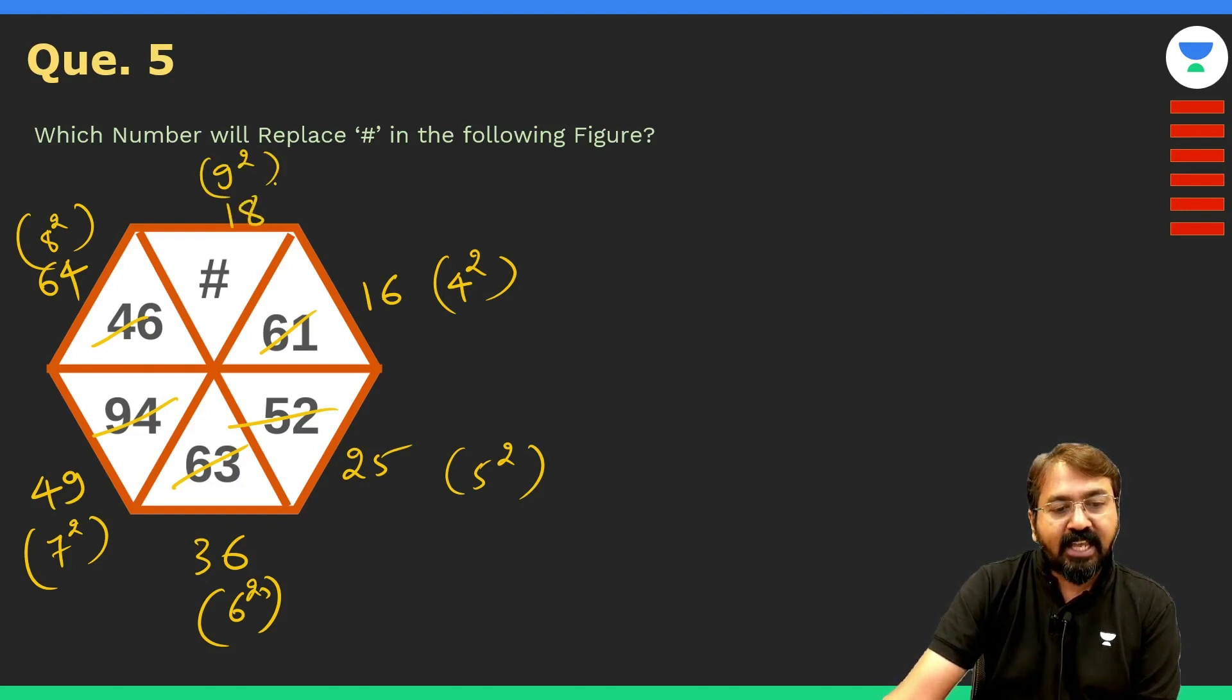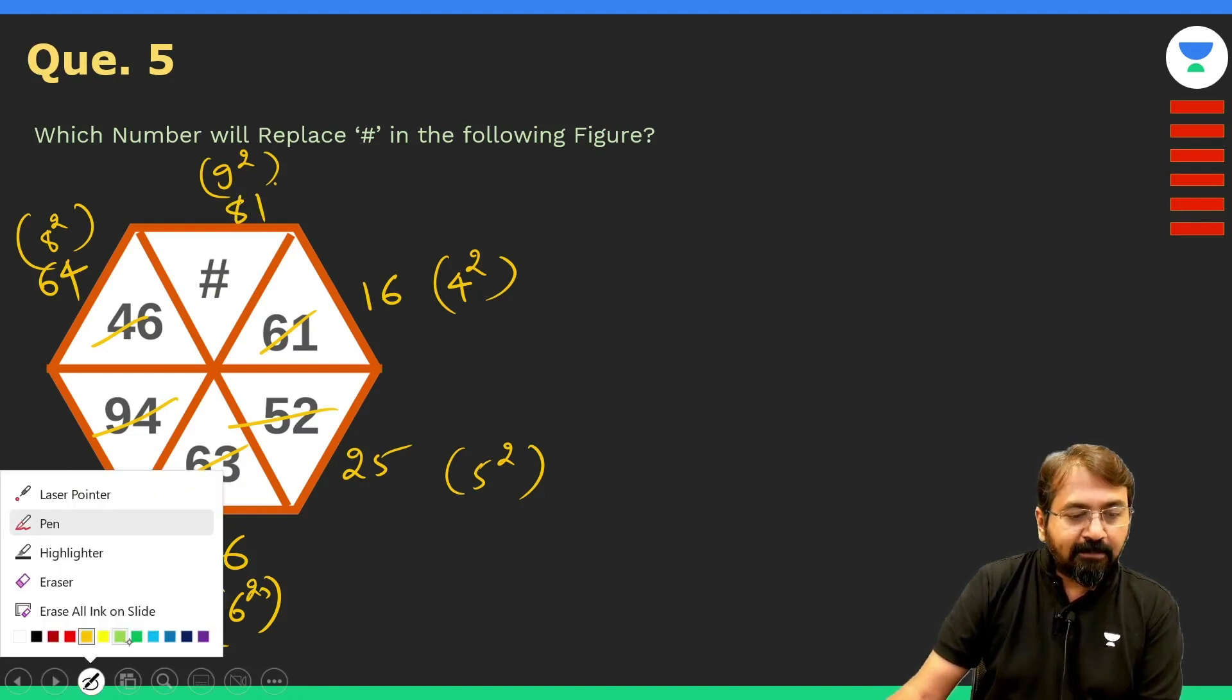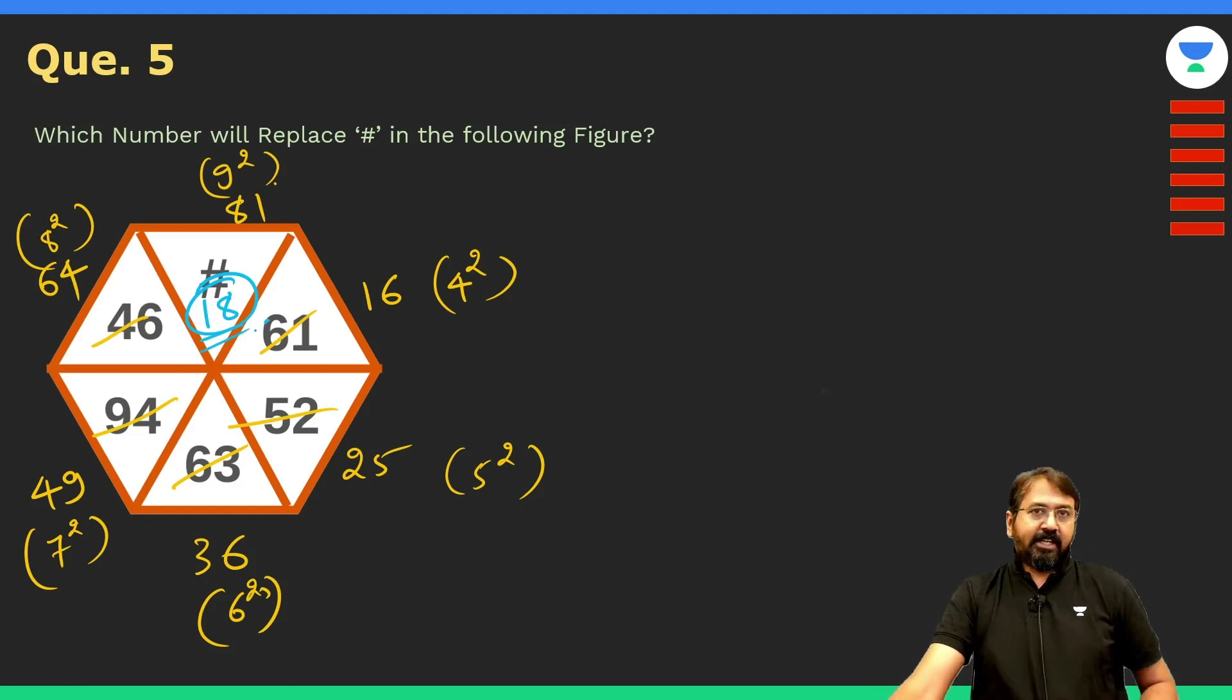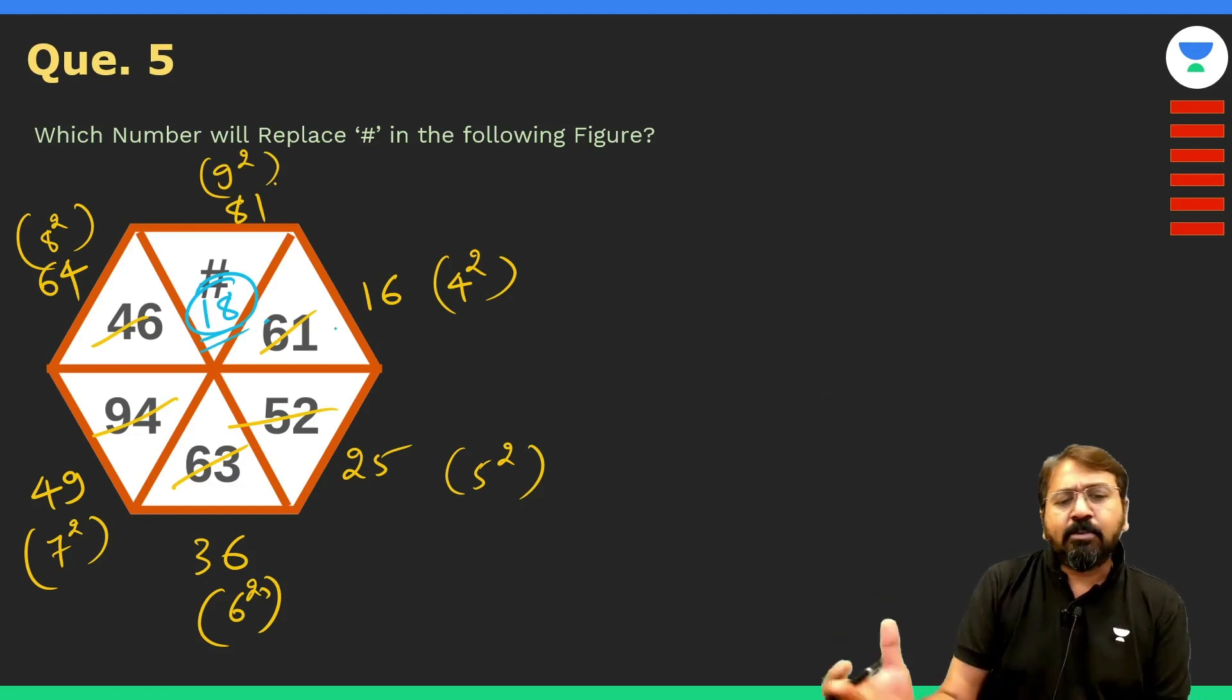So here it should actually be 81, I mean this should be 81. So the value in place of this hash mark should be 18, so we will replace it with 18.